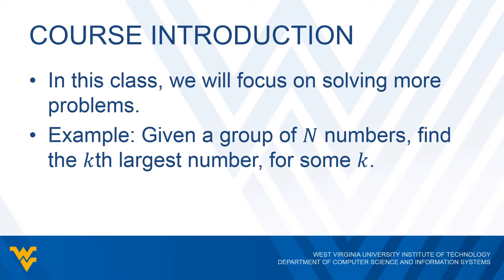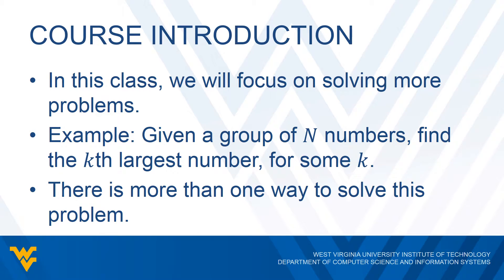Let's say we have a group of n numbers and we want to find the kth largest number. So for example, if k is 3, we want to find the third largest number; if k is 5, we want the fifth largest. How would we go about solving this? What we're going to find is that there's actually more than one way to solve this particular problem. In CS 121 we looked at one particular way of solving problems, but here we'll see there are multiple approaches.